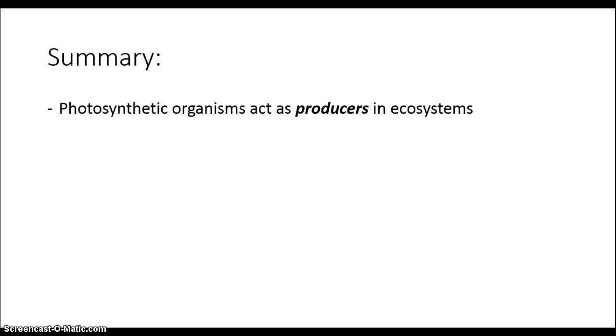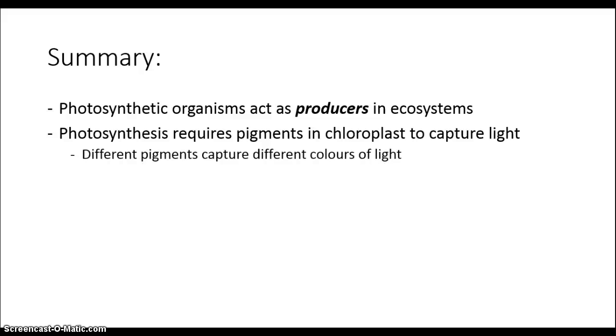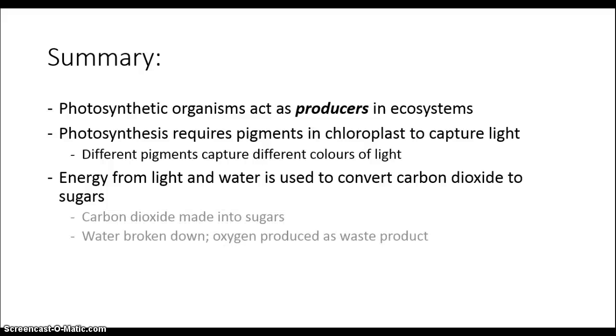In summary, these photosynthetic organisms act as producers in their environment, making their own food from energy in their surroundings. Photosynthesis uses sunlight specifically. The process uses a number of different pigments that capture different amounts of different colors of light in order to produce sugars from raw materials like carbon dioxide. The water that is also used is broken down into oxygen and released as a waste product.